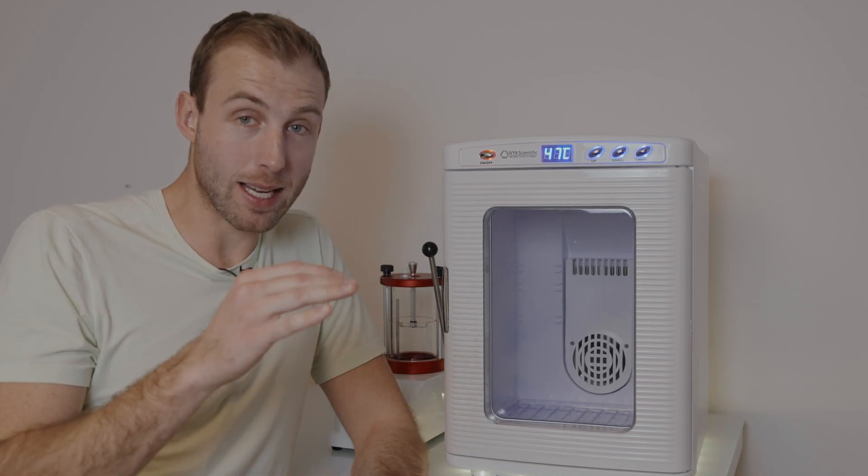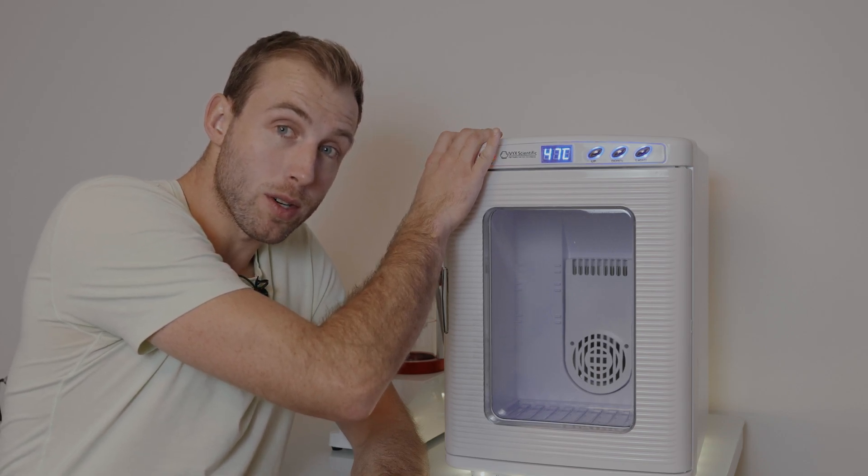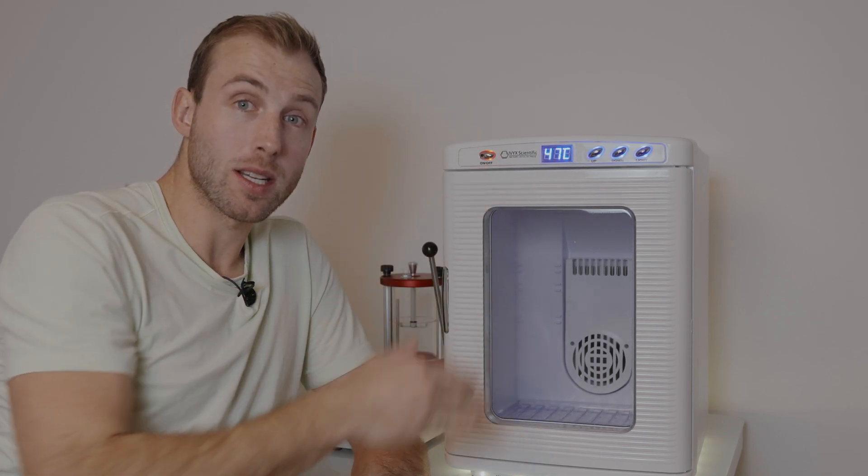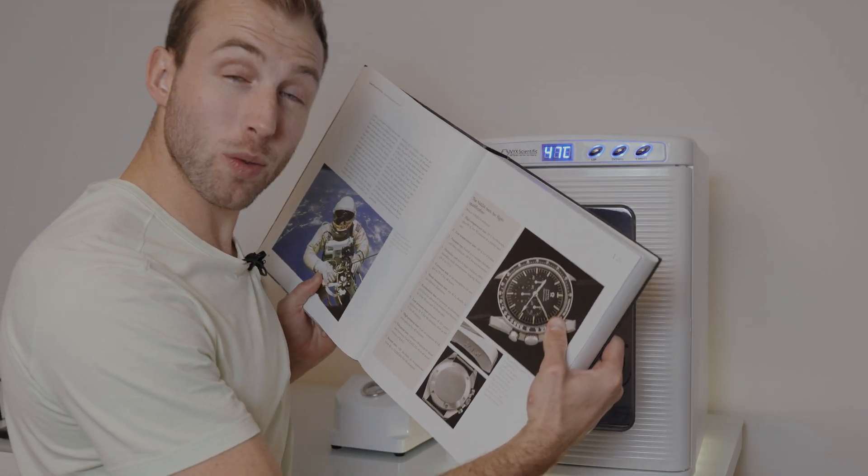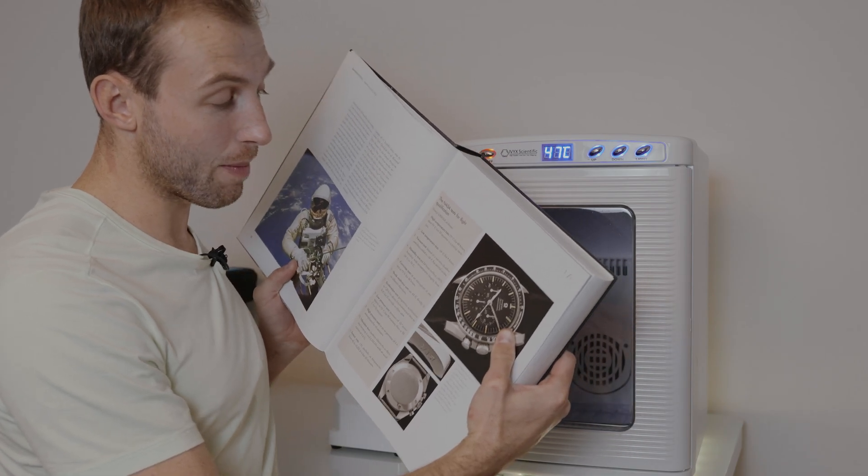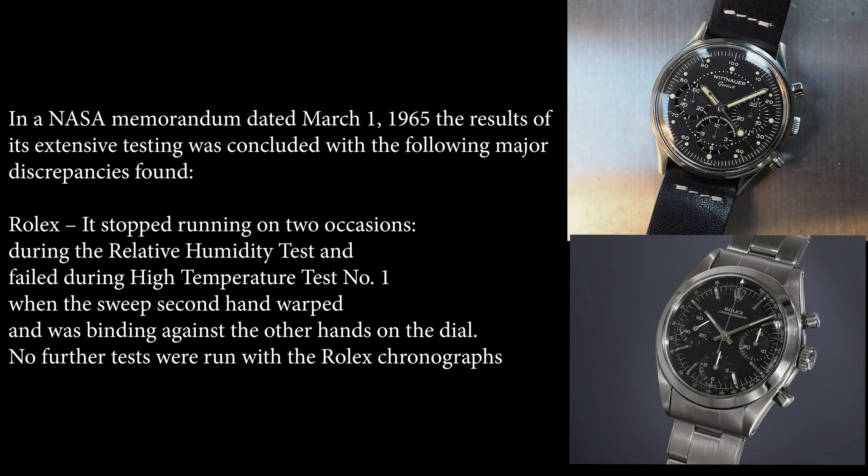This is the temperature test - 48 hours at 60 degrees Celsius. I'll document it throughout the 48 hours. Then at the end, we have 93 degrees Celsius at 30 minutes in a partial vacuum using a heat pad in a vacuum chamber. The high temperature test failed a lot of the original NASA watches. This is obviously a plastic watch or has a lot of plastic components, so it'll be interesting to see how long it lasts.